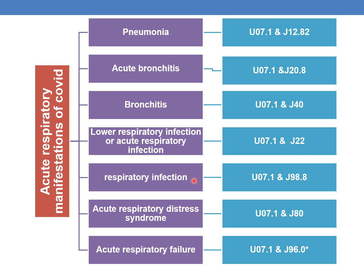For respiratory infection NOS, assign U07.1 and J98.8. For acute respiratory distress syndrome resulting from COVID-19, first code U07.1 then J80. For acute respiratory failure, assign U07.1 and J96.0 series. The asterisk indicates there is further subclassification.